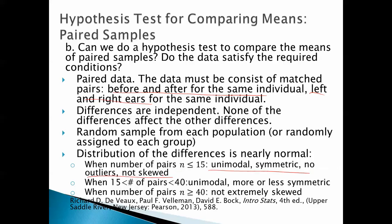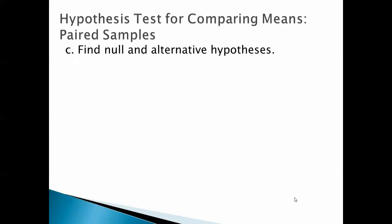When the number of pairs is between 15 and 40, the differences have to be distributed like that. And when the number of pairs is greater or equal to 40, the differences just can't be extremely skewed.